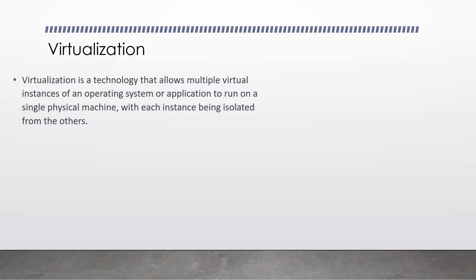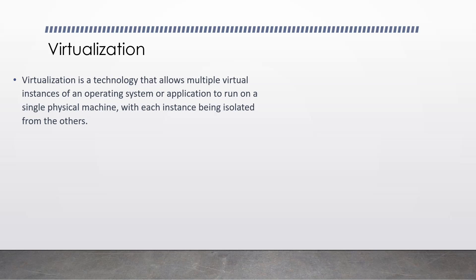Virtualization is a technology that allows multiple virtual instances of an operating system or application to run on a single physical machine, with each instance being isolated from the others. The physical machine, also known as the host, provides necessary resources such as processing power, memory, storage, and networking connectivity to all the virtual instances, which are known as guests or VMs. Virtualization allows for greater flexibility and efficiency in computing, resulting in cost savings by reducing the number of physical machines required and enabling better utilization of resources by allowing them to be shared between multiple VMs.